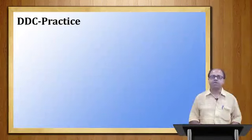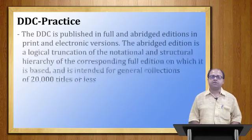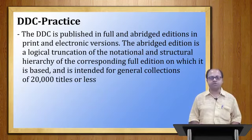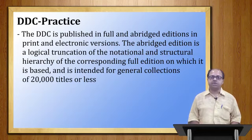Dewey Decimal Classification, and its relative index helps in context analysis of any subject term. DDC was published in full and abridged editions in print and electronic versions. The abridged edition is a logical truncation of the notational and structural hierarchy of the corresponding full edition, and is intended for general collections of 20,000 titles or less. For collections of twenty thousand or fewer titles, the DDC abridged edition may be used.